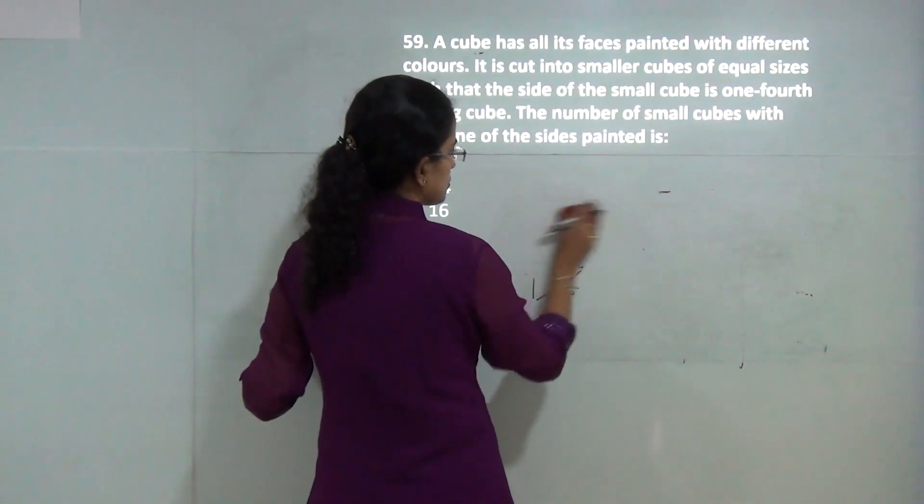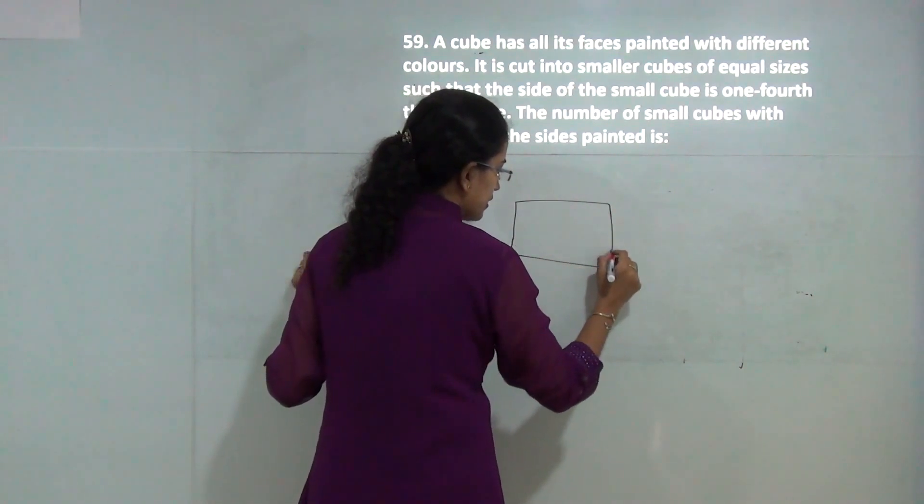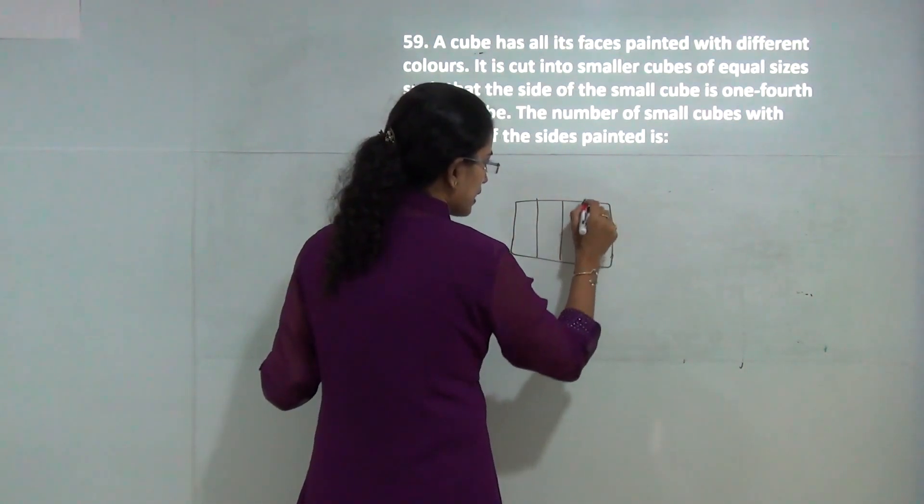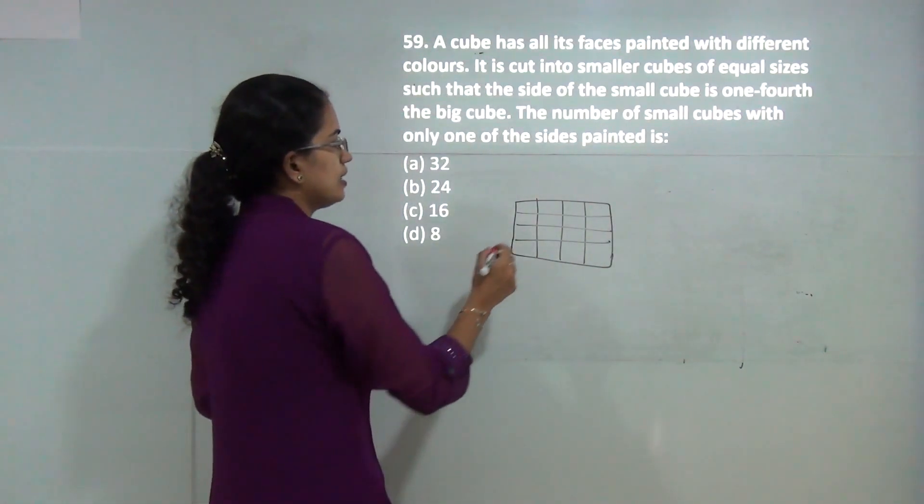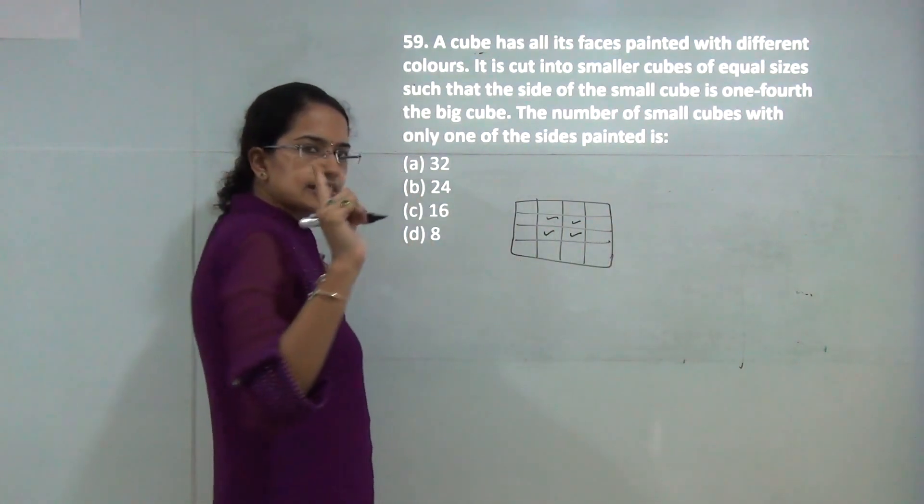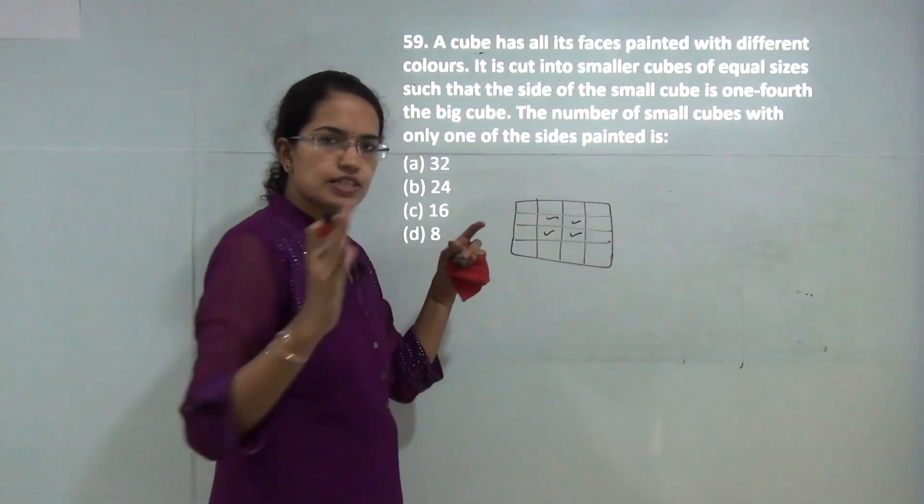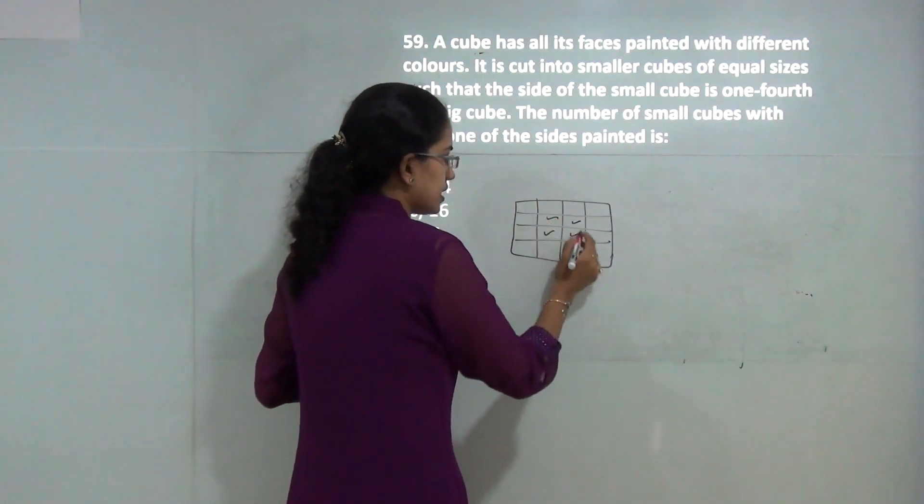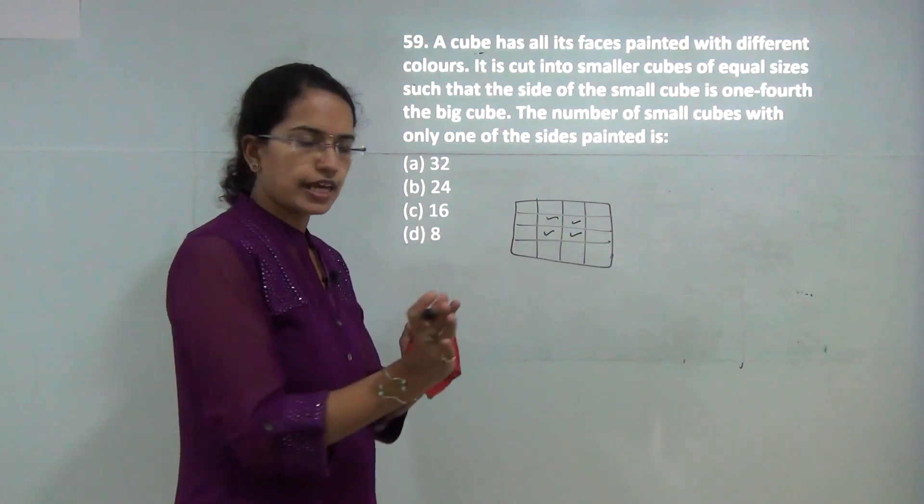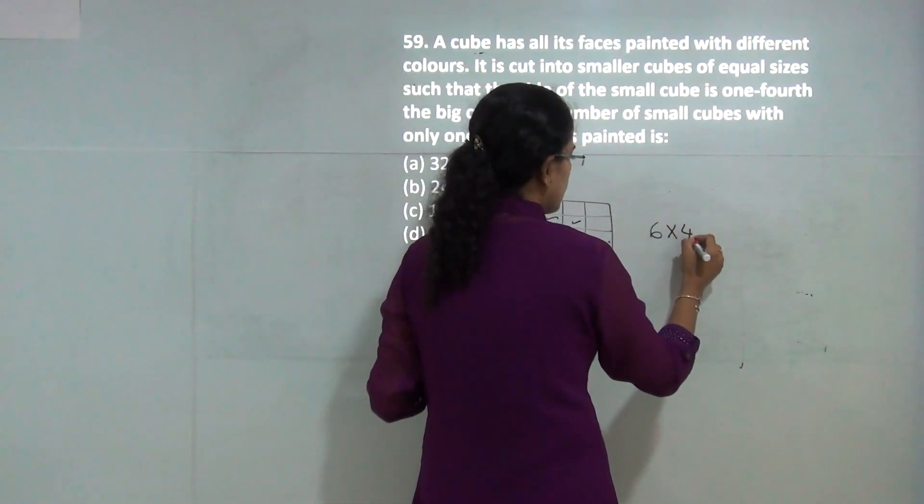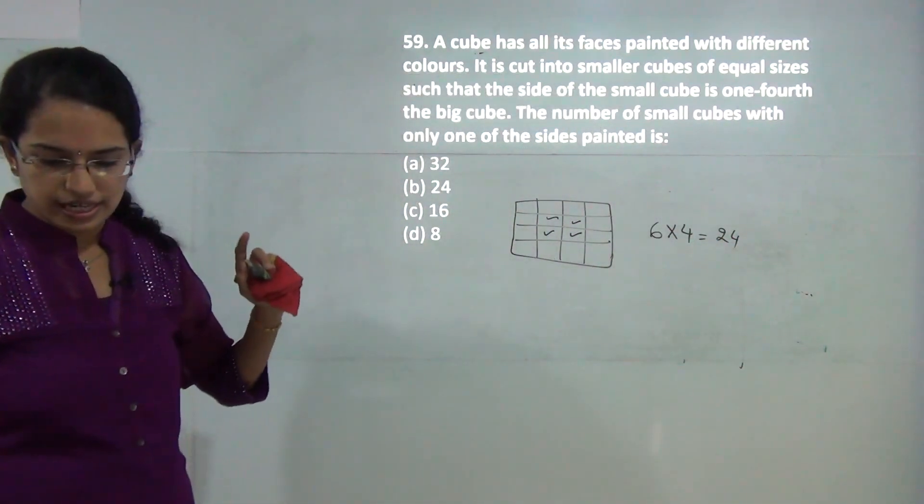A cube is cut into smaller pieces such that each side is one fourth. The 4 middle pieces on each face would have one side painted. There are 6 faces on the cube, and each face has 4 pieces with one side painted. So 6 times 4 equals 24 pieces with one side painted.